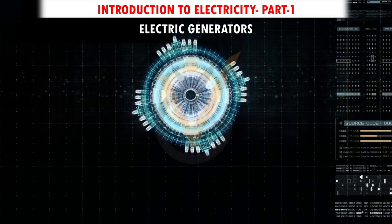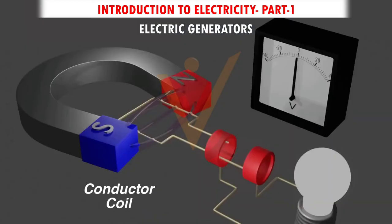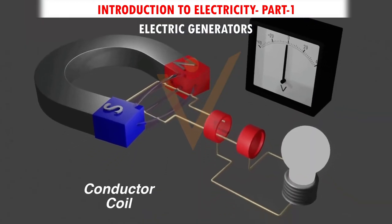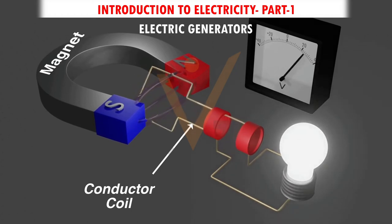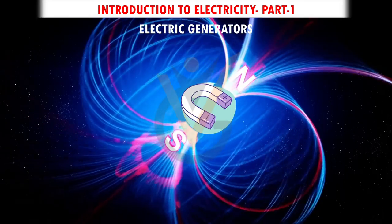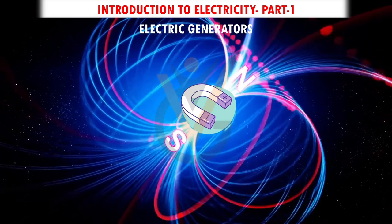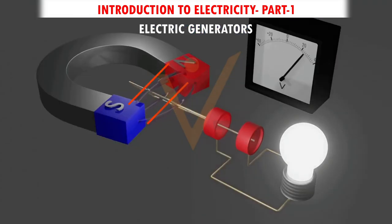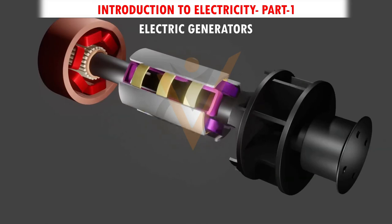Electric generators work on the principle of electromagnetic induction. A conductor coil — a copper coil tightly wound onto a metal core — is rotated rapidly between the poles of a horseshoe-type magnet. When the coil rotates, it cuts the magnetic field between the two poles, and the magnetic field interferes with the electrons in the conductor to induce a flow of electric current. This is how electricity is generated.